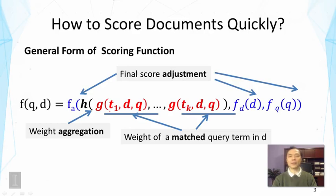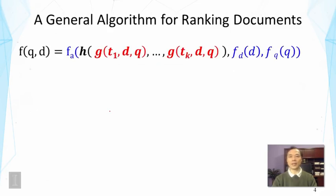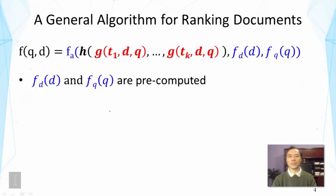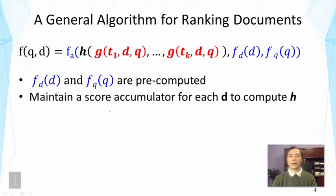This general form would cover many state-of-the-art retrieval functions. Let's look at how we can score documents with such a function using inverted index. Here's a general algorithm that works as follows. First, these query level and document level factors can be pre-computed in the indexing time. Of course, for the query, we have to compute it at query time. But for document, for example, document length can be pre-computed. Then we maintain a score accumulator for each document d to compute h.